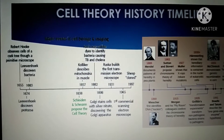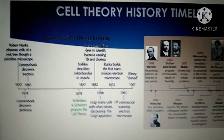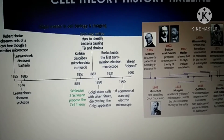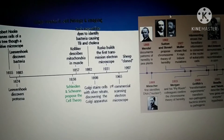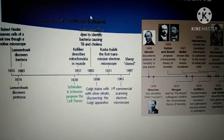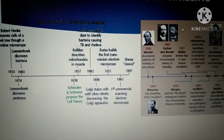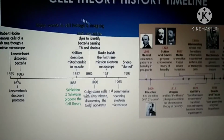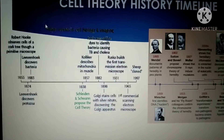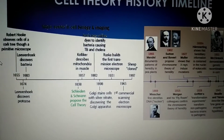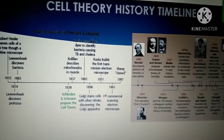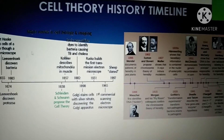Now let's look at the cell theory and history timeline. A timeline helps in clearly mapping out the discoveries of the cell. Just as in history we use timelines for events like the French Revolution or Indian history, timelines are the best way to represent time along with events in brief, for conceptual clarity.